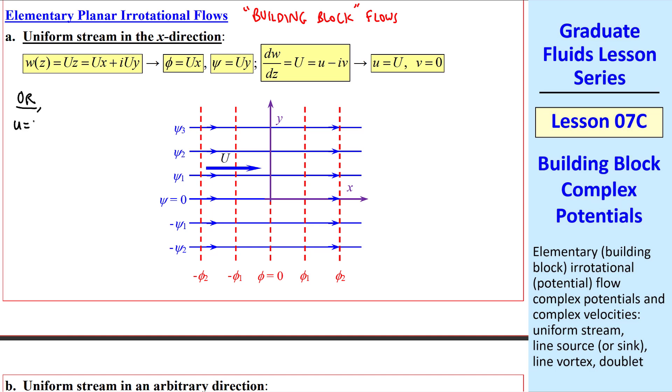Or, you can start with the velocity field, since it's known in this problem, from which we know that dw dz, the complex velocity, becomes capital U minus zero, or just U. Now we can integrate w of z equal uz plus a constant. This can be any constant, but we typically set it to zero. And we can always add a constant to our complex potential without changing the flow, since the velocity field is given by a derivative. This agrees with what we started with previously. In other words, we kind of worked backwards here.